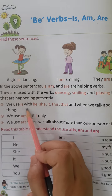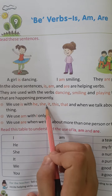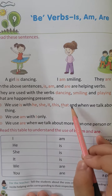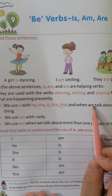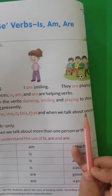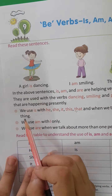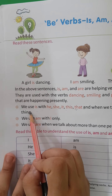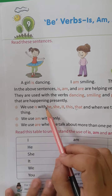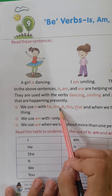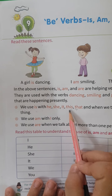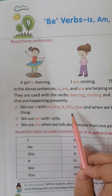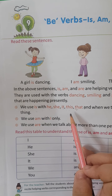We use is with he, she, it, this, that, and when we talk about one person or one thing. Aapko pata hai is ham he, she, it, this, that — single chizos ke liye is lagate hai.